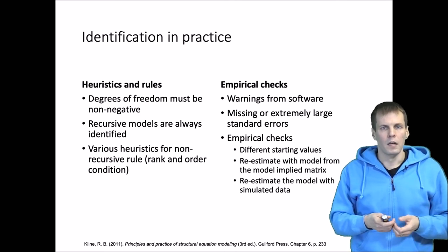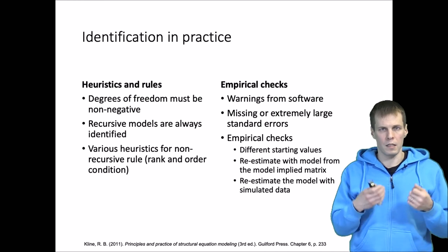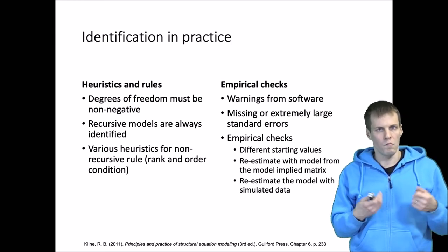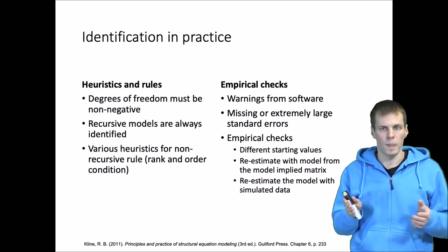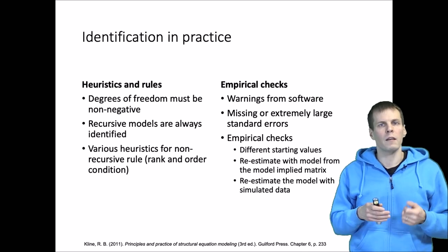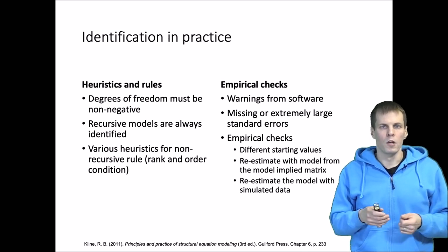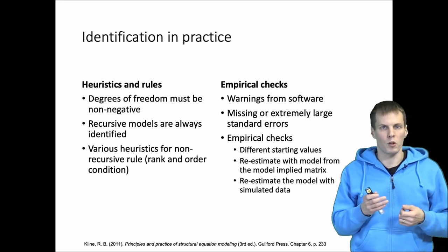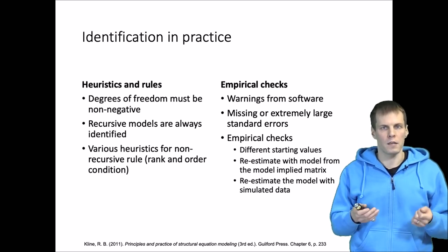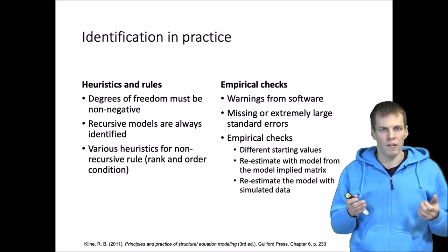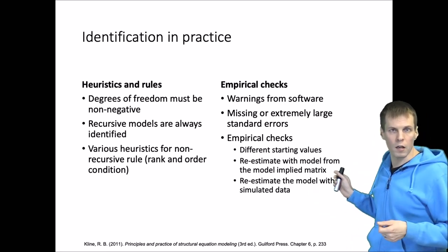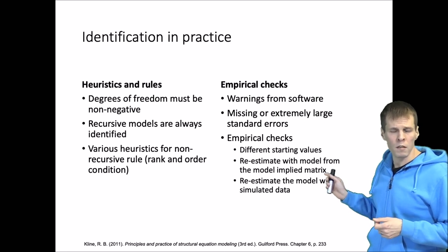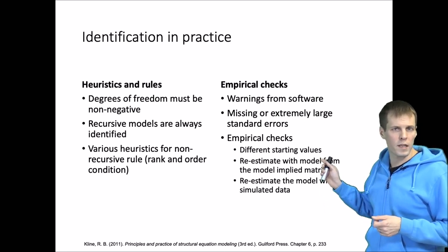Generate data where you know that your model holds, then estimate the model. If you get the correct estimates, then the model probably is identified; if not, then the model is not identified for sure. Sometimes generating data from the correct model may be difficult — for example, models with feedback loops are challenging. In that case, you can just generate any correlated data and apply the different starting values strategy. These are some empirical strategies for establishing identification.